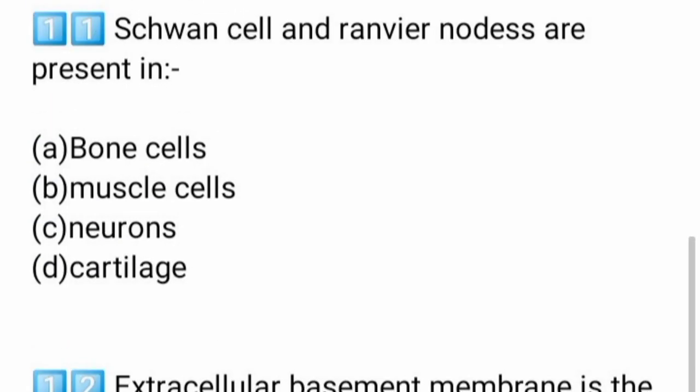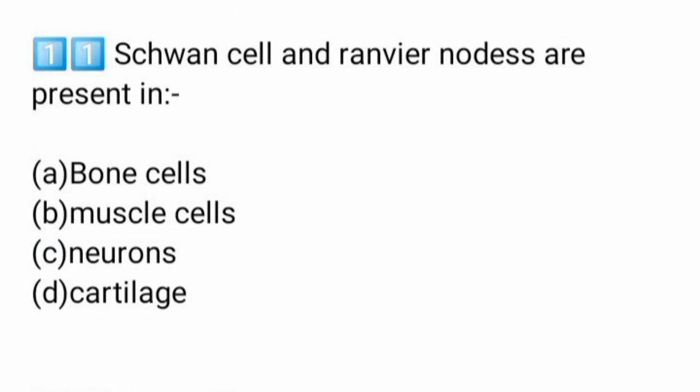Schwann cells and Ranvier nodes are present in — the options include neurons, bone cells, muscle cells, and cartilage. Schwann cells and Ranvier nodes are associated with neurons.